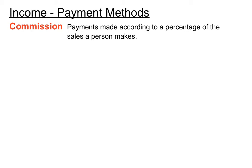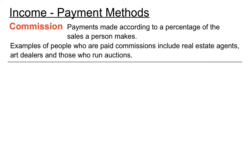Commissions: these are payments made according to a percentage of the sales that a person makes. If a company employs a salesperson and they make a sale, the company gets most of the profits but the salesperson gets a slice as well — that's a commission. Examples of people paid on commission include real estate agents, who get a percentage of the house value they sell, art dealers for selling paintings, and auctioneers who get a percentage of the goods they sell.